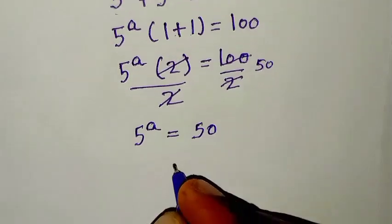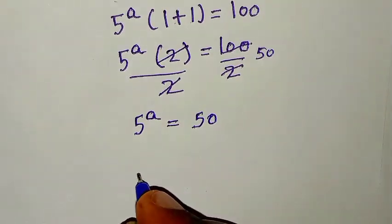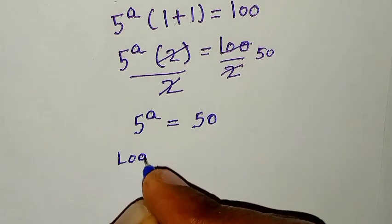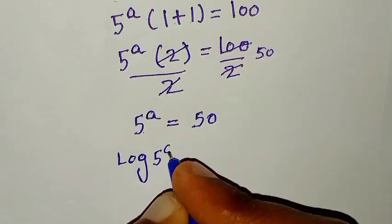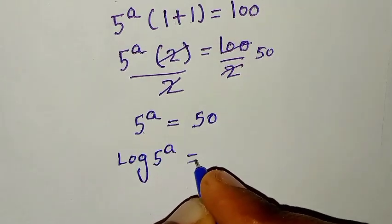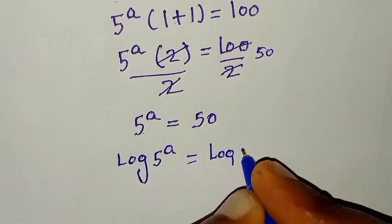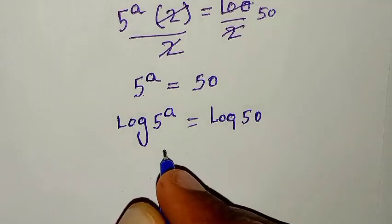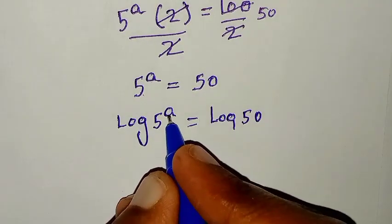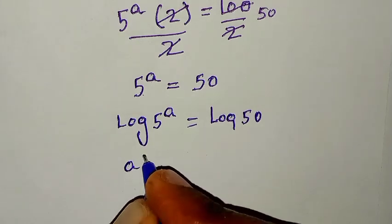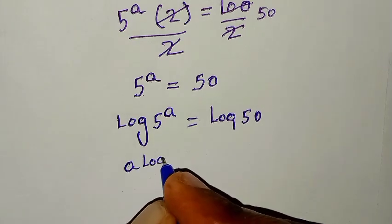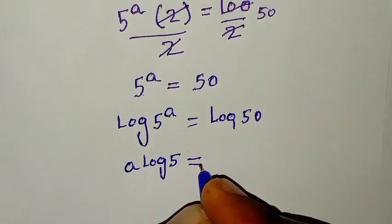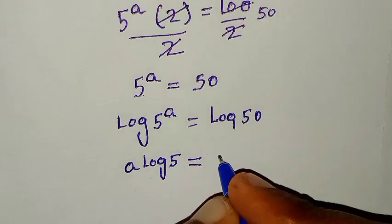Then in the next step, we will apply log on both sides. So it will be log of 5 to the power of a is equal to log of 50. Then this power of a will move to the front. So it will be a log of 5 is equal to log of 50.